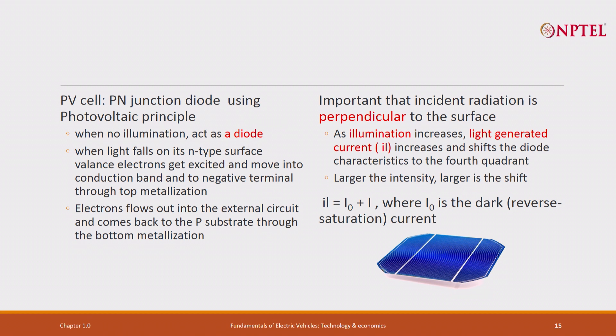In fact, the current will flow in the reverse direction. Normally, diode current is supposed to flow in the forward direction. When light is excited, it will flow in the reverse direction.